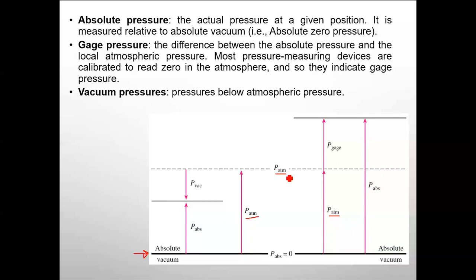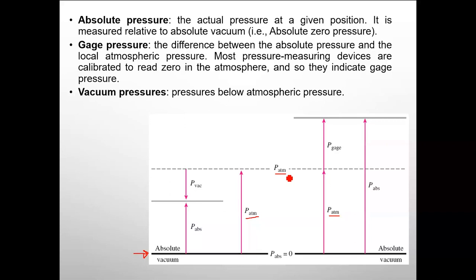A system pressure can be more or less than atmospheric pressure. When it is more, the difference measured by the gauge on the cylinder is the gauge pressure. When it is less, the difference between atmosphere and the system level is the vacuum pressure. Looking from the absolute vacuum floor, that measurement is the absolute pressure.